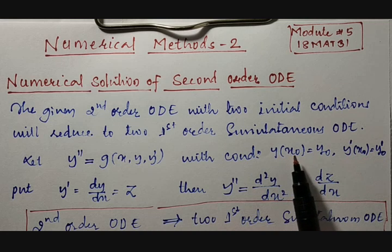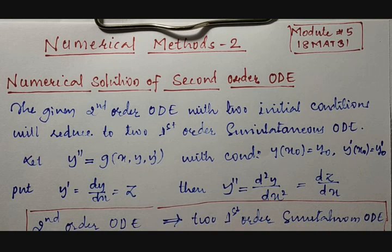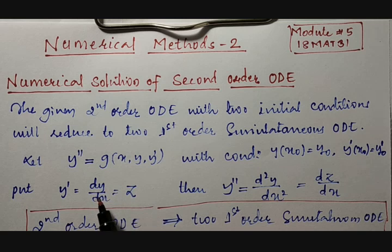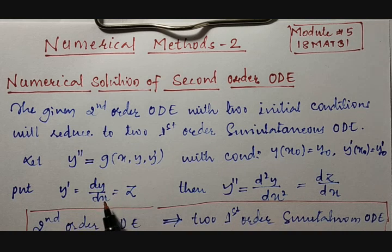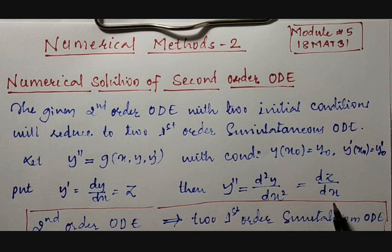The functional value and the derivative value of y are both given with respect to the initial value of x — that is y₀, y₀', and x₀ are given. To convert the second order ODE, substitute y' = dy/dx = z. If we differentiate this substitution once again, we get the second order derivative: y'' = d²y/dx² = dz/dx.